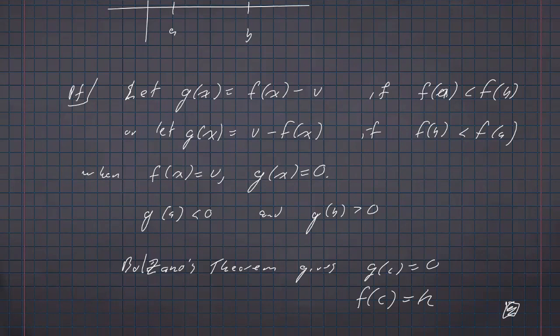Again, the picture makes a lot of sense. If you have a continuous curve going from a high point to a low point, it's got to hit every point in the middle somewhere. It's obvious, it makes a ton of sense — but it is incredibly difficult to prove. And proving it requires this idea of completeness.